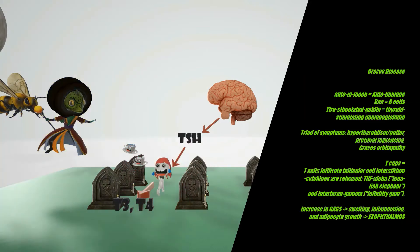Basically, what Graves disease does is cause an overproduction of thyroid hormone, which is why Graves disease is the most common cause of hyperthyroidism. Symptoms seen in hyperthyroidism — such as increased metabolic rate and increased sweating — will therefore be seen in Graves disease.